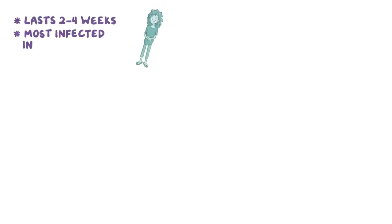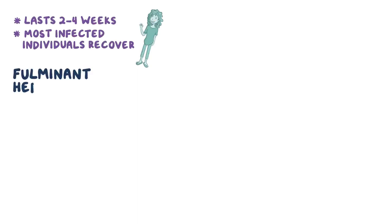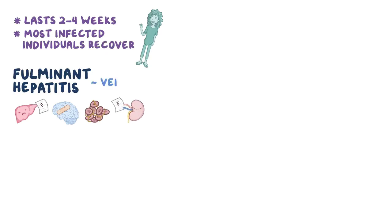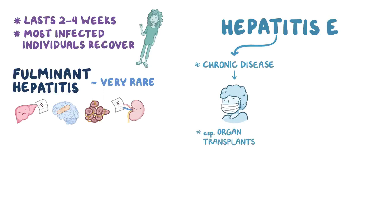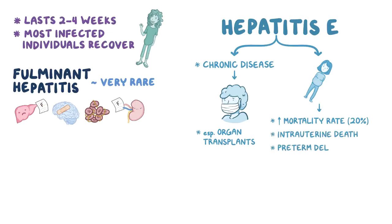The disease usually lasts two to four weeks and most infected individuals completely recover. Fulminant hepatitis with liver failure, brain damage, coagulation impairment, and kidney failure is very rare. Hepatitis E can rarely cause chronic disease in immunocompromised individuals, especially those with organ transplants, as they are taking lifelong immunosuppressive treatment to prevent transplant rejection, which can also interfere with virus clearance. In pregnant individuals, hepatitis E infections come with a high mortality rate — about 20% — and can also cause intrauterine death, preterm delivery, and stillbirth.